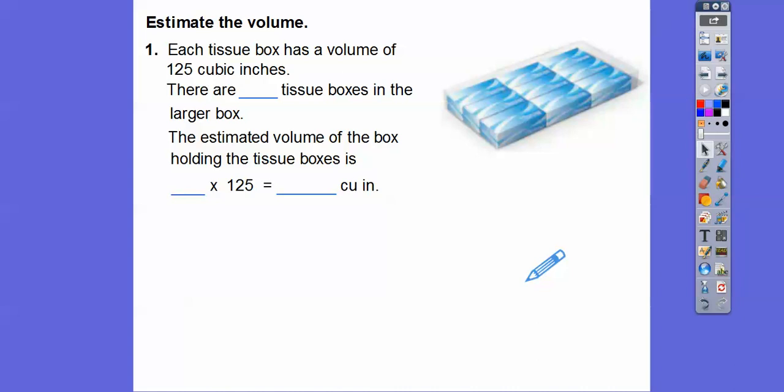There are how many tissue boxes in the large box? So it looks like I see three here, three here, that's six, three more is nine. But it looks like there's two stacks of them. So I'm getting 18 total boxes. Either case, we're going to multiply the number of boxes times the volume of one box, which is 125.